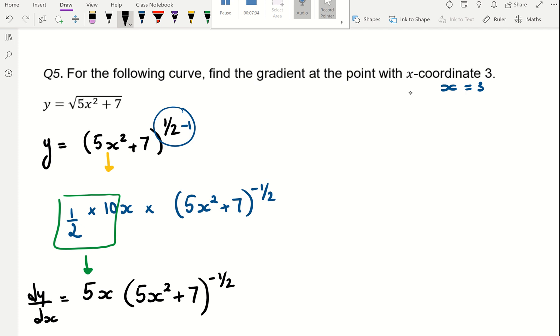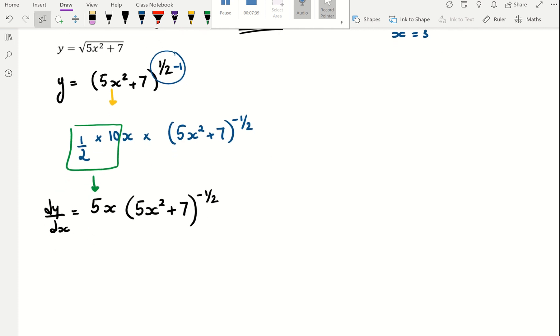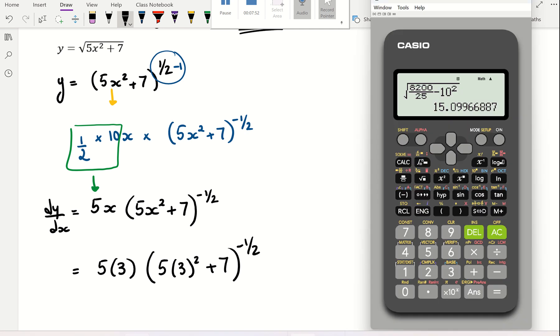Now we want to find the gradient, so we want to find the value of dy over dx when x equals 3. So you need to substitute x equals 3. 5 times 3 times 5 times 3 squared plus 7 to the power of a half. And you can put that into your calculator.